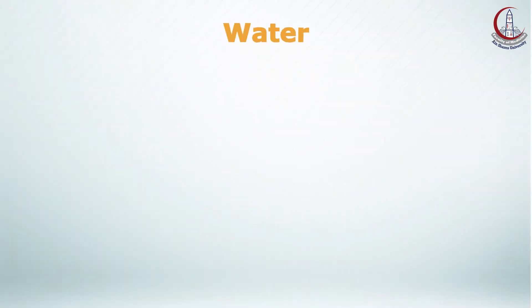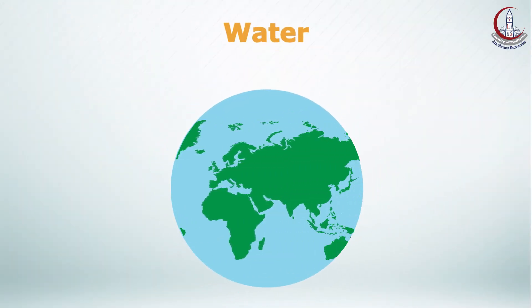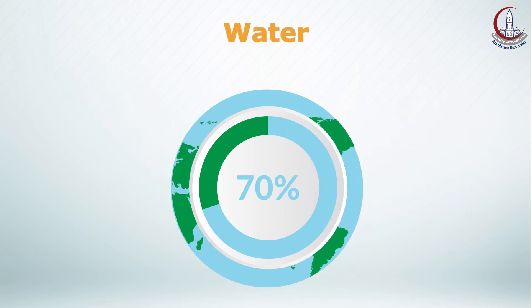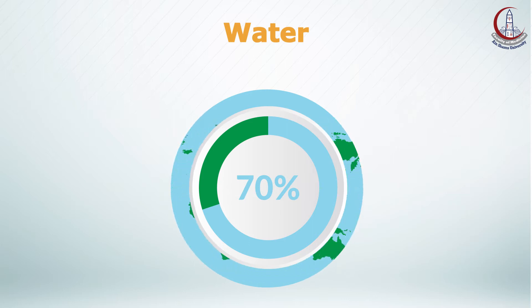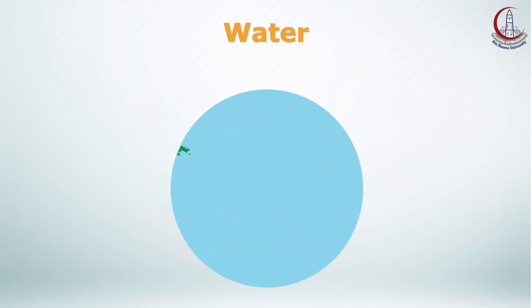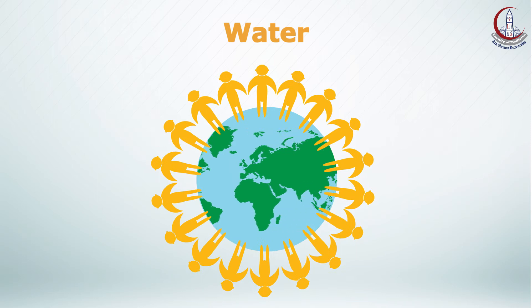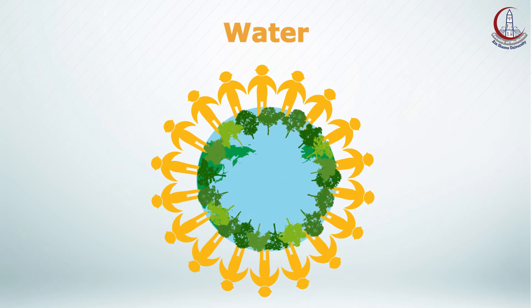Let's start with water. Water covers over 70% of the earth's surface. It is a very important resource for people and for the environment.